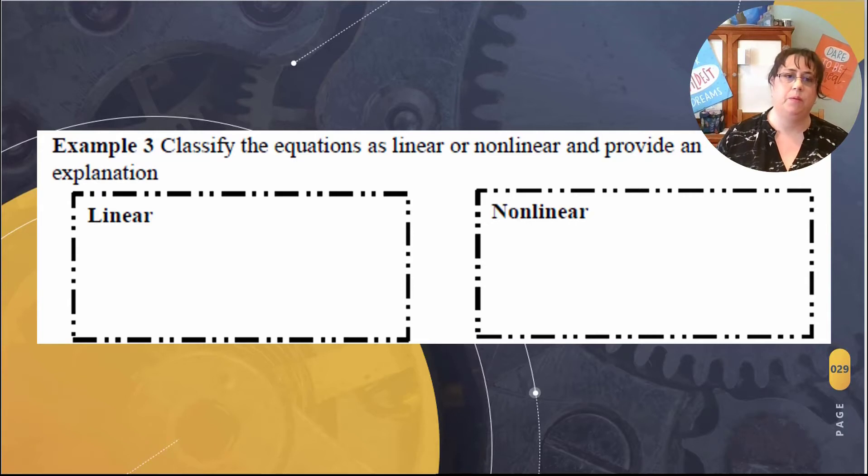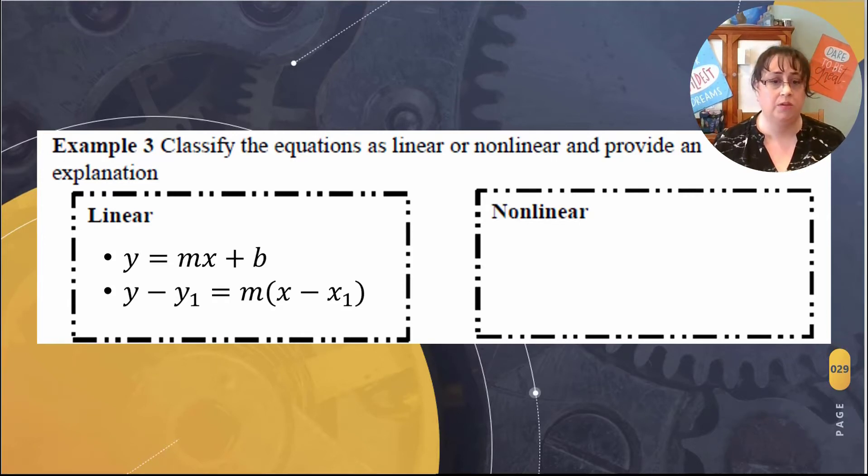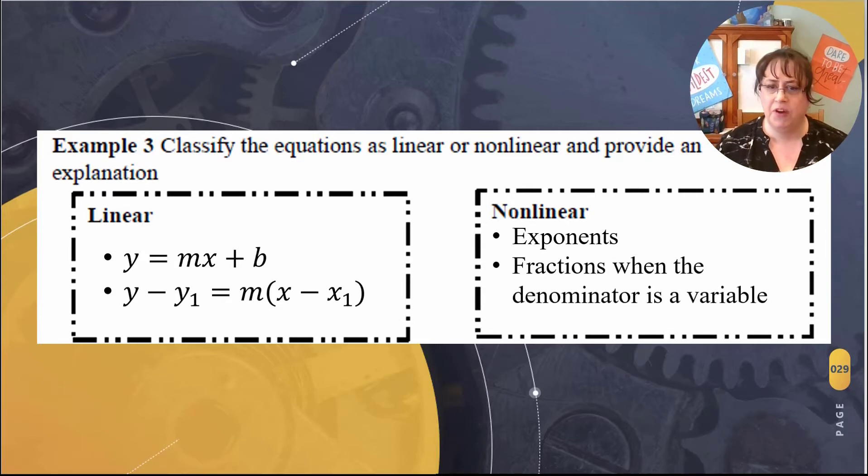So let's look at example number three. We're going to classify the equations as linear or nonlinear and provide an explanation. So this is looking just at the equation and then determining what it is. When we have a linear equation, we're going to use y = mx + b slope intercept form, or y - y₁ = m(x - x₁) point slope form—our linear equation formulas. If it's nonlinear, things we're going to be looking for are exponents or fractions where the denominator is variable.